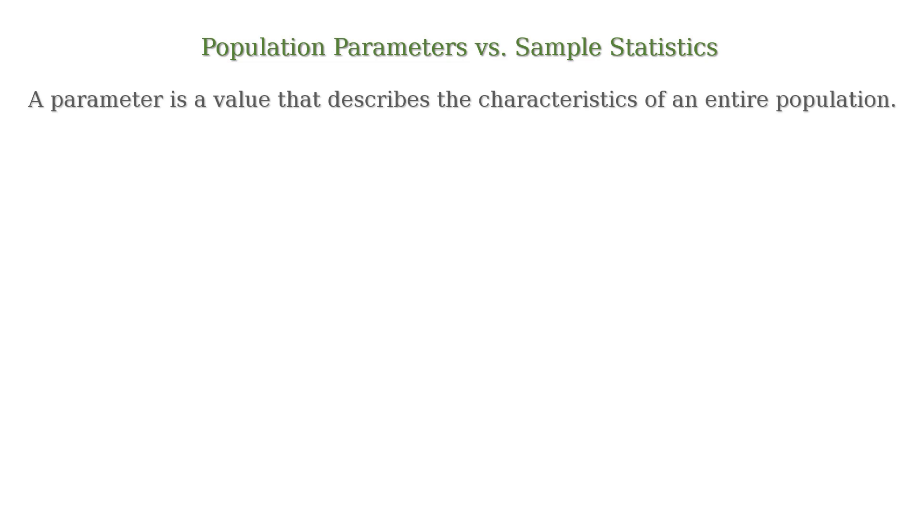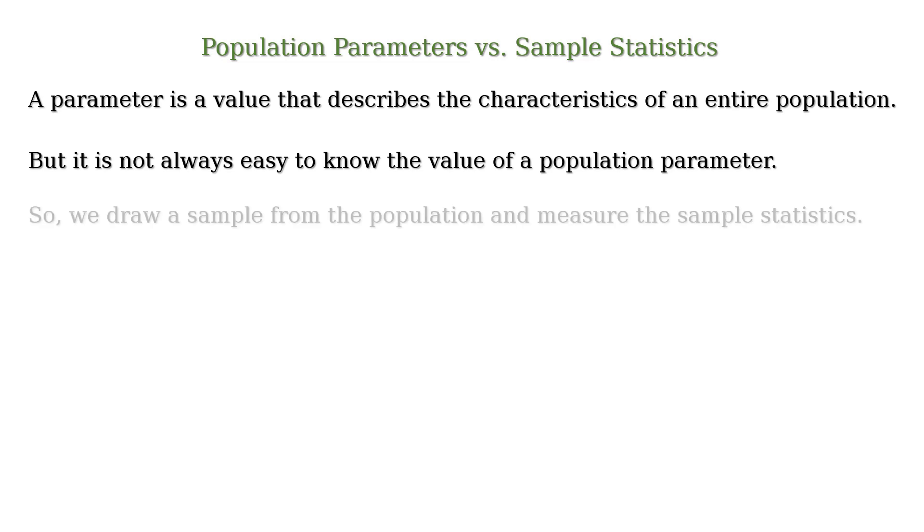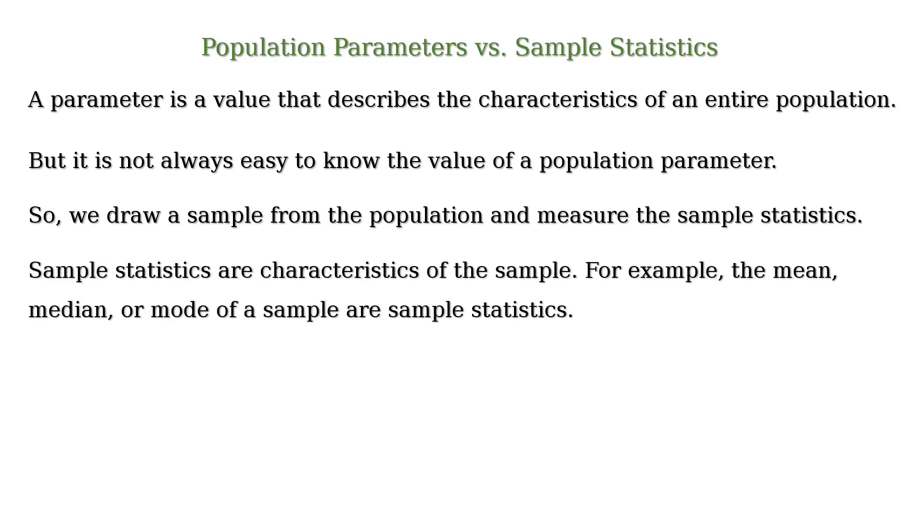So to summarize, a parameter is a value that describes the characteristics of an entire population. But it is not always easy to know the value of a population parameter. So we draw a sample from the population and measure the sample statistics. Sample statistics are characteristics of the sample. For example, the mean, median, or mode of a sample are sample statistics.